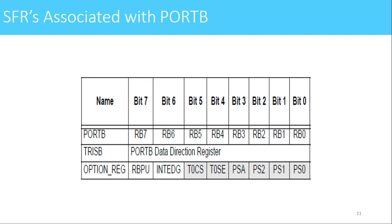The SFRs associated with port B are port B, TRISB, and the option register. Port B is used to set the bit level of a pin to either 1 or 0. TRISB sets the direction of port B pins. The option register serves two purposes: the RBPU bar bit controls the internal pull-up on or off, and the INTEDG bit configures the edge for the external interrupt on the RB0 pin.